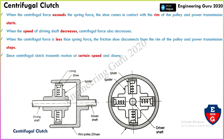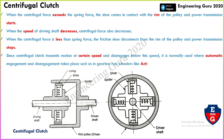Since the centrifugal clutch transmits motion at a certain speed and disengages below that speed, it is normally used where automatic engagement and disengagement take place, such as in gearless two-wheelers like Activa and Moped.